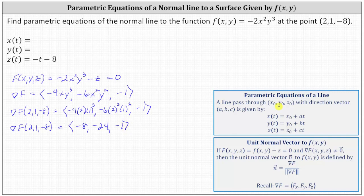Referring back to the parametric equations of a line in space, this gives a direction vector where a = -8, b = -24, and c = -1. Notice they already provided the equation z(t) = -t - 8.